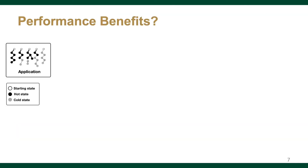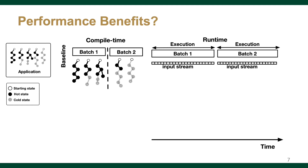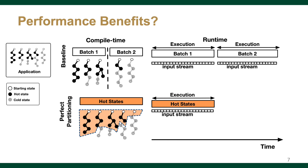Here is an example illustrating the performance benefits of configuring only hot states. The application is split into two batches. At runtime, the AP needs to execute the same input stream for each batch. Now suppose we have an oracle knowledge of hot states — in this case, the hot states could fit in one batch. At runtime, the AP only executes the input stream once, which leads to significant cycle savings.